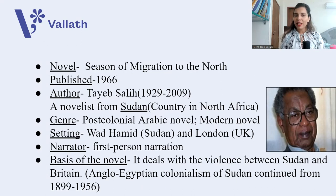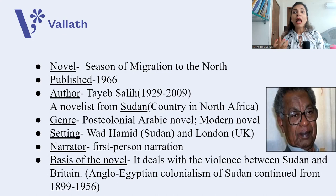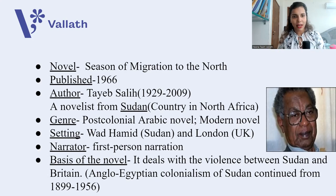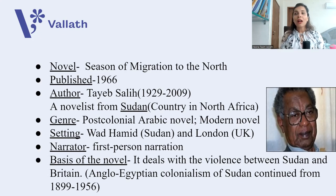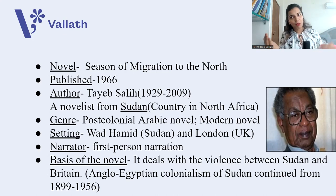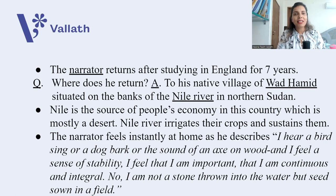The setting of this novel is two places: one in Sudan and one in UK. In Sudan, there is a village called Wad Hamid, and the city of London in UK. The narration is first-person, and the basis of this novel is that Tayyab Sali has written Season of Migration to the North to depict the violence between Sudan and Britain. Sudan was under Anglo-Egyptian rule, meaning both Britishers and Egyptians together ruled over Sudan from 1899 to 1956.